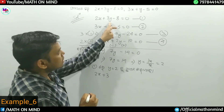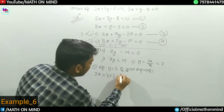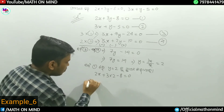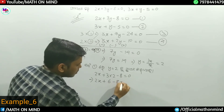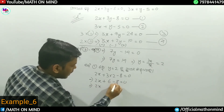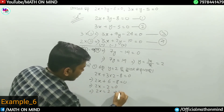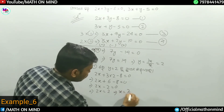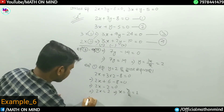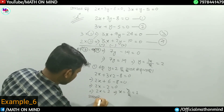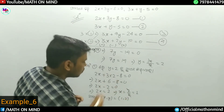y is equal to 2. Substituting back: 2x plus 3 into 2 minus 8 is equal to 0. So 2x plus 6 minus 8 equals 0. Then 2x minus 2 equals 0, so 2x equals 2, therefore x is equal to 2 by 2, which is 1. The answer is x=1, y=2, so the solution is (1, 2).